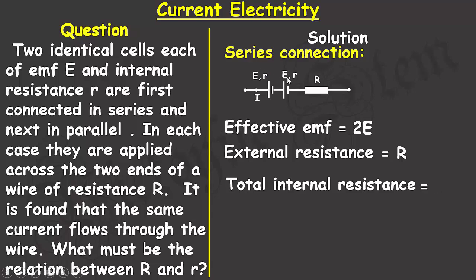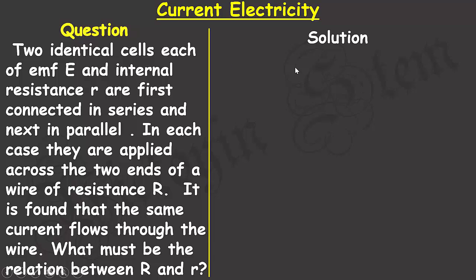The external resistance in the wire is R, and the total internal resistance will be the sum of the two internal resistances of the two cells: r plus r equals 2r. Applying Ohm's law, the current through this circuit will be equal to the effective EMF 2E divided by the external resistance R plus the total internal resistance 2r.